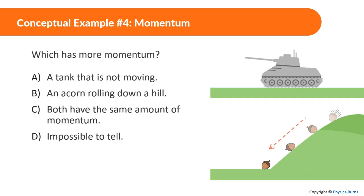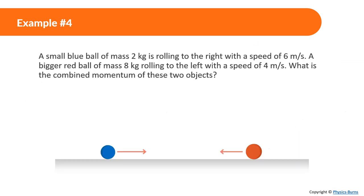We're going to learn about what this change of momentum is shortly. Conceptual example number 4: which has more momentum, a tank that is not moving or an acorn rolling down a hill? You might think that the tank has more momentum because it has so much mass and the acorn just has a tiny bit of mass. But since it's not moving, velocity is zero, meaning momentum is zero. The acorn is moving, so that means there is momentum, even though it just has a tiny amount of mass. So an acorn rolling down the hill will have more momentum.